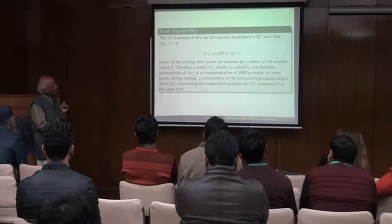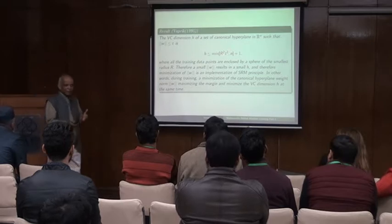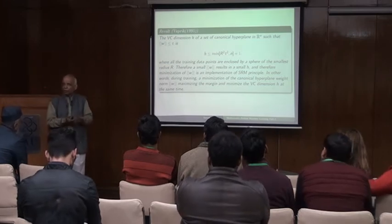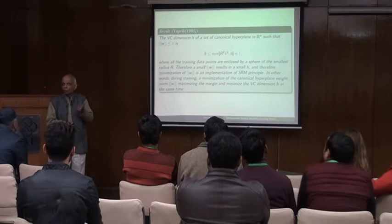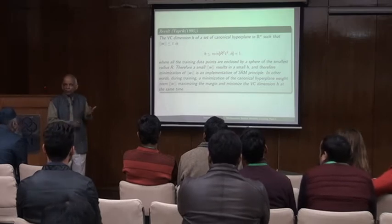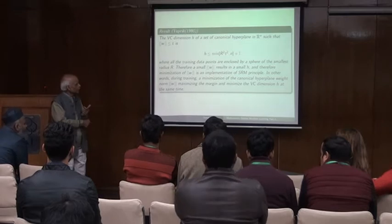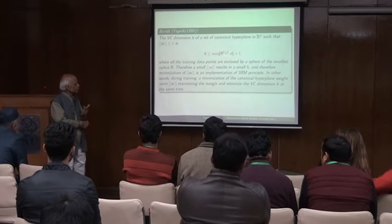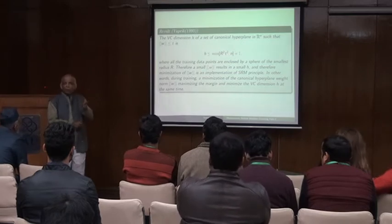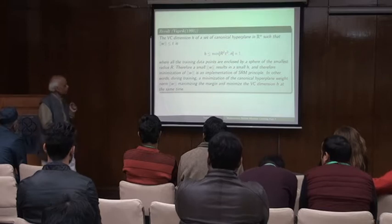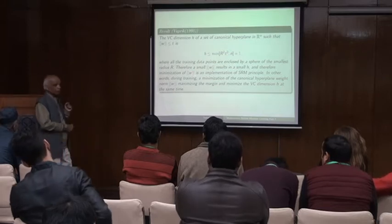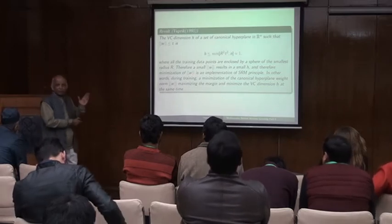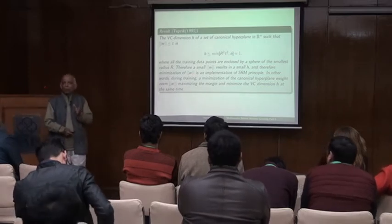Now, r² is fixed by the data set — r² is fixed. I can always find out the sphere of small radius. That means we don't worry about r² — what matters is the quantity t. If I want to minimize h, I should minimize this point t, because r² is fixed. So I should minimize t, which comes from norm of w less than or equal to t. That means I should minimize the norm of w. And to minimize the norm of w, you will maximize the margin. So this is the argument for bringing margin into the picture.